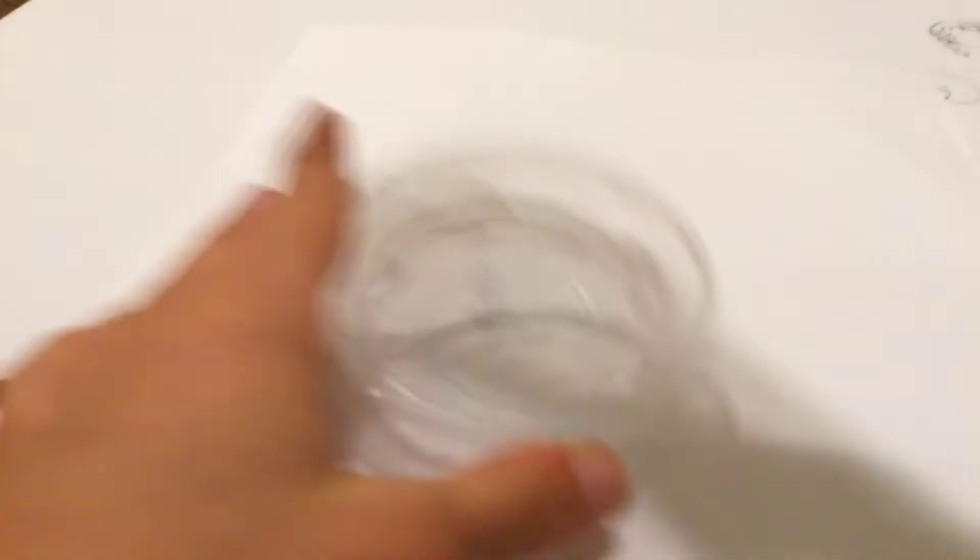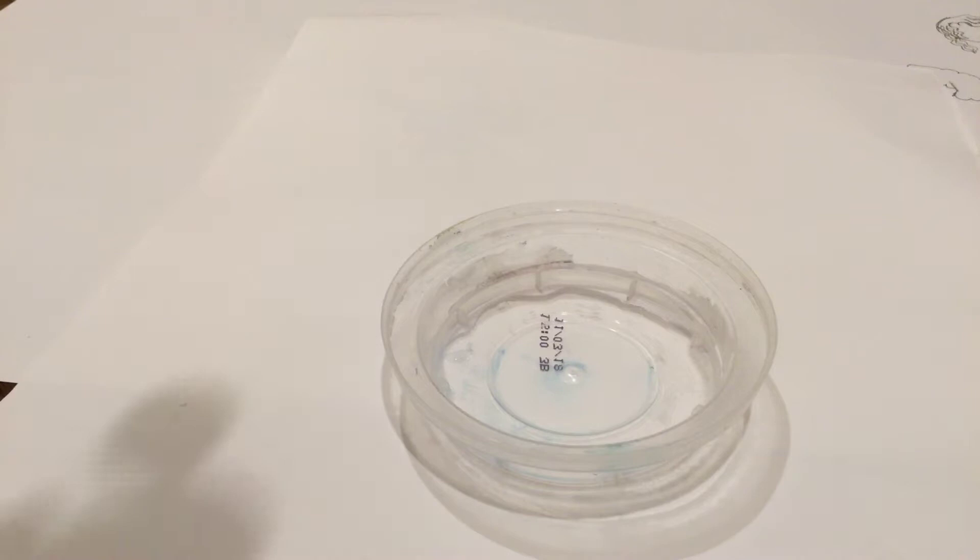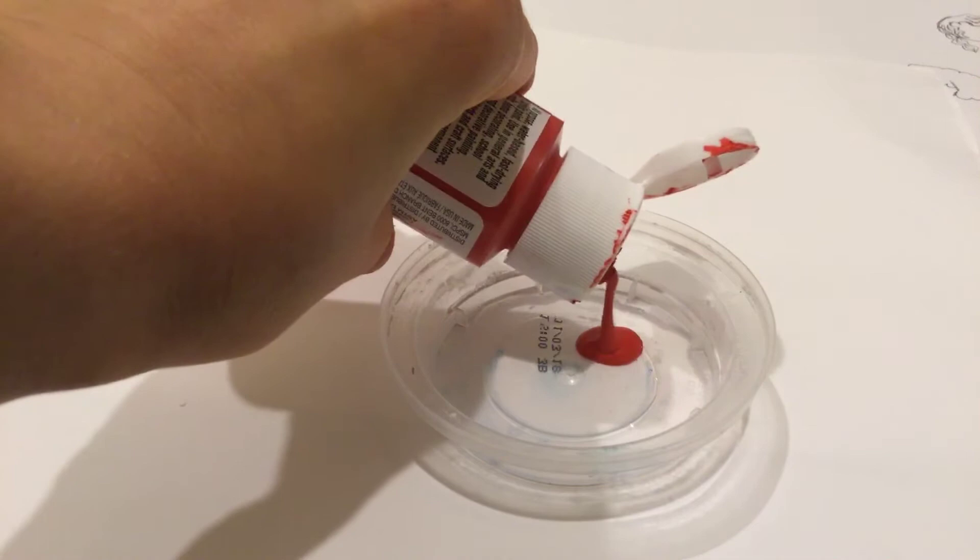You're going to just squeeze out your acrylic paint into your container, just a little bit. You don't need a lot. And you're going to squeeze your next color. I'm using red and green, you can use any colors you want.